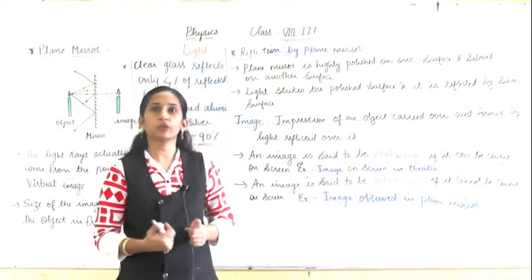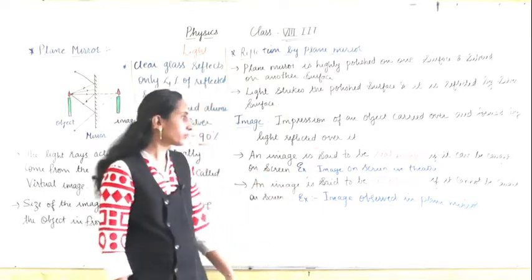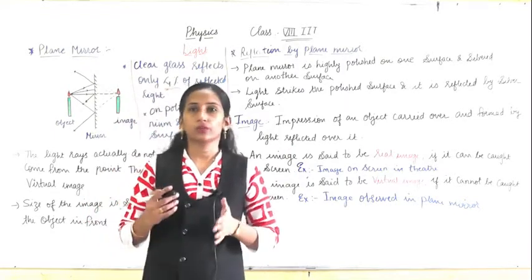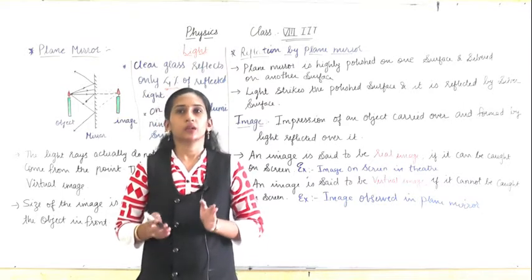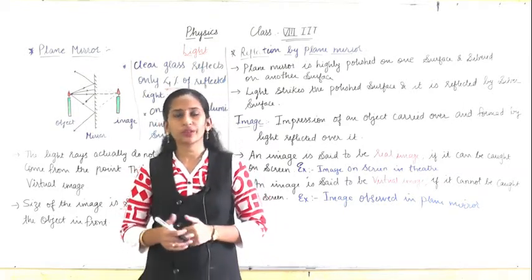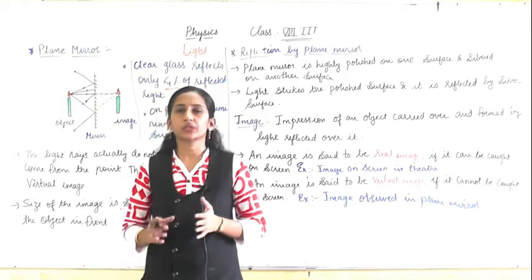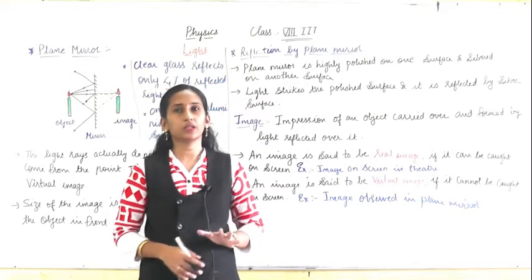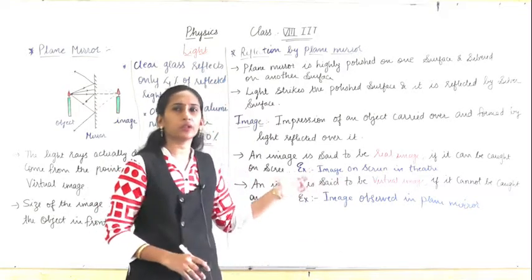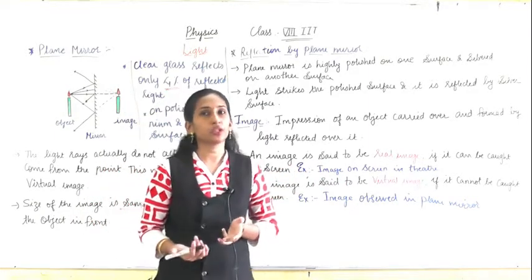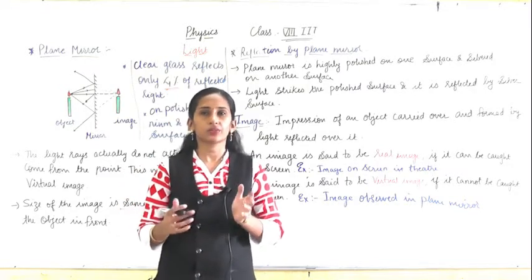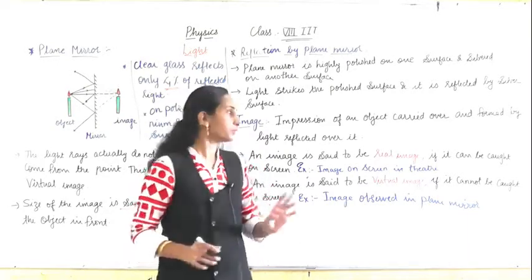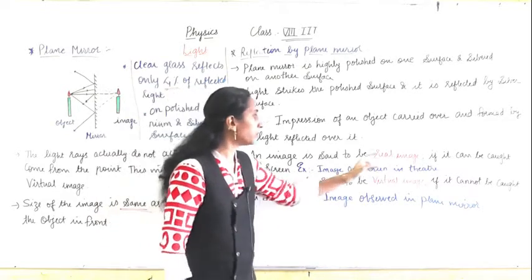Images are of two types: real image and virtual image. Before going into this topic, I want to mention that this topic is also for 10th standard, so this is a good opportunity to clear your concepts here. Please concentrate because these are very important basic concepts of light. Some students find it difficult to imagine what is virtual and what is real, but these are actually simple things.